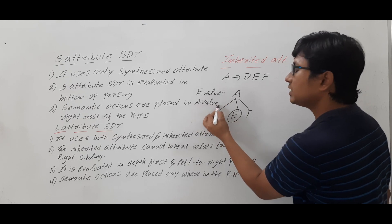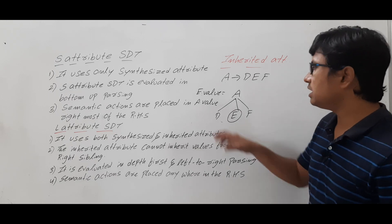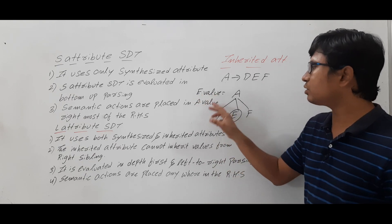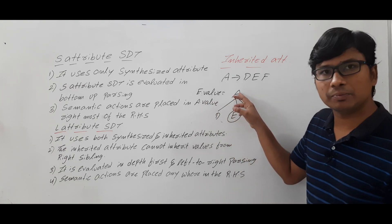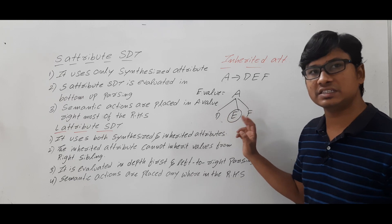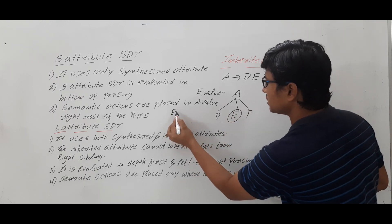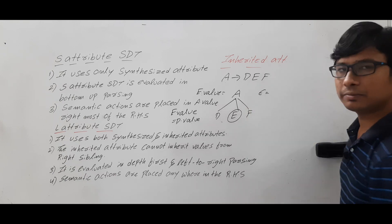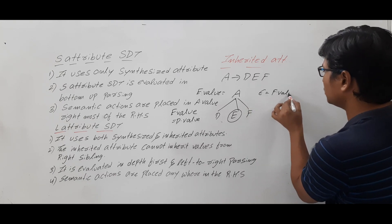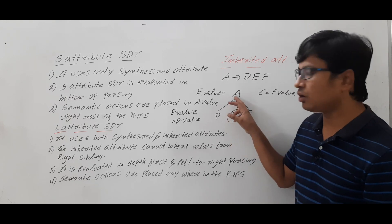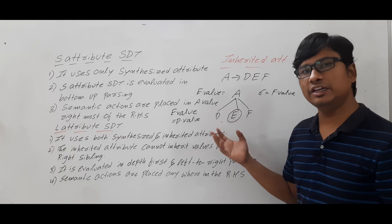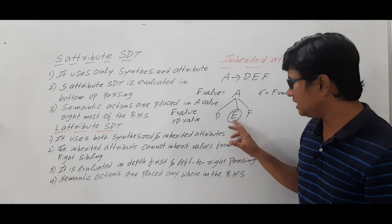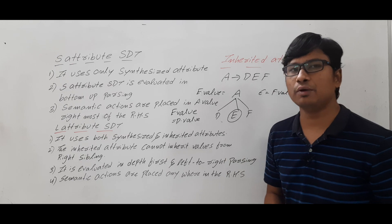Now let's take E's value — the child node value. If it depends on the parent node value, it is the reverse of synthesized attribute, where the parent's value depends on the child. Here, if E.value = A.value (depending on the parent node), or E.value = D.value (left sibling), or E.value = F.value (right sibling), meaning the child node value depends on its parent or any of its siblings, then we call it an inherited attribute.